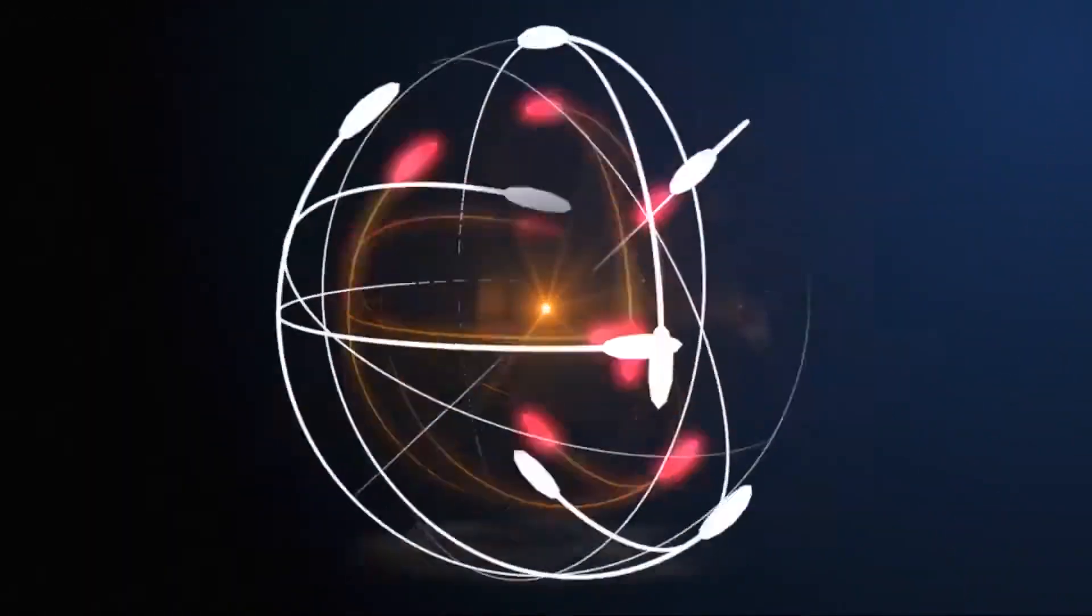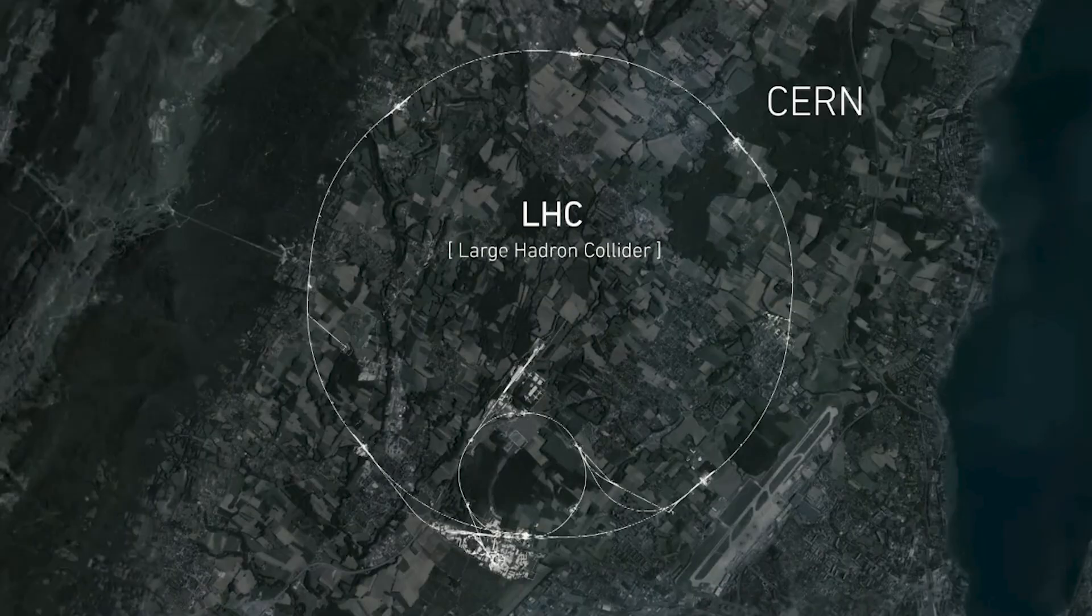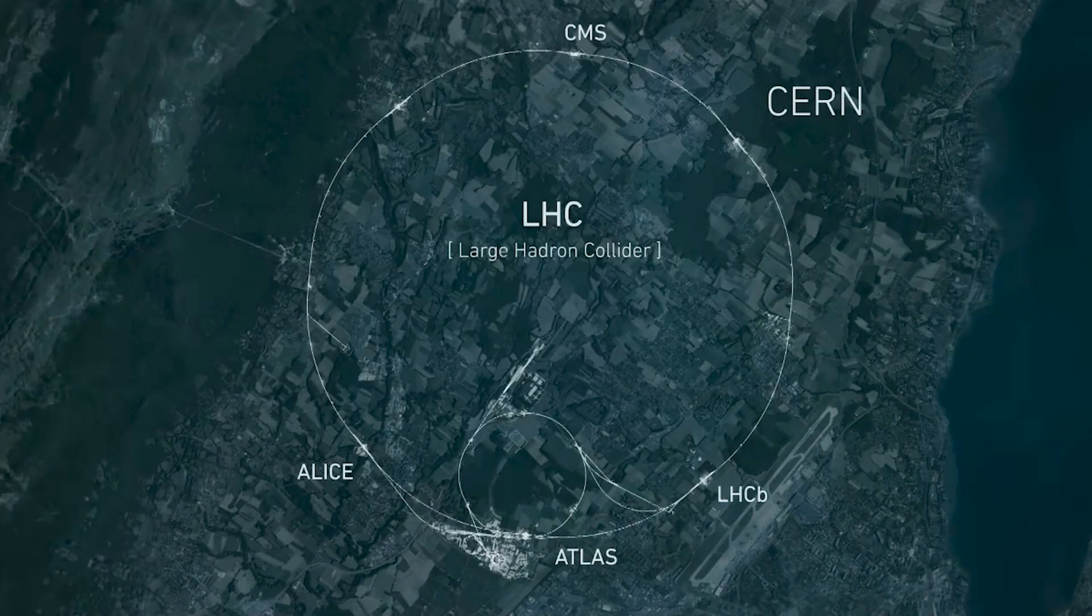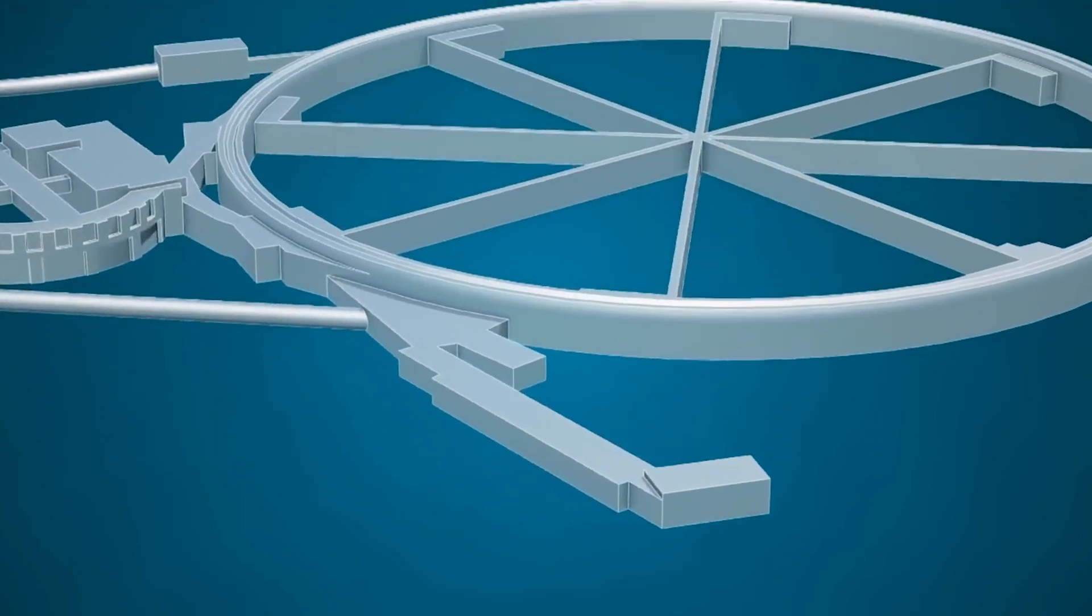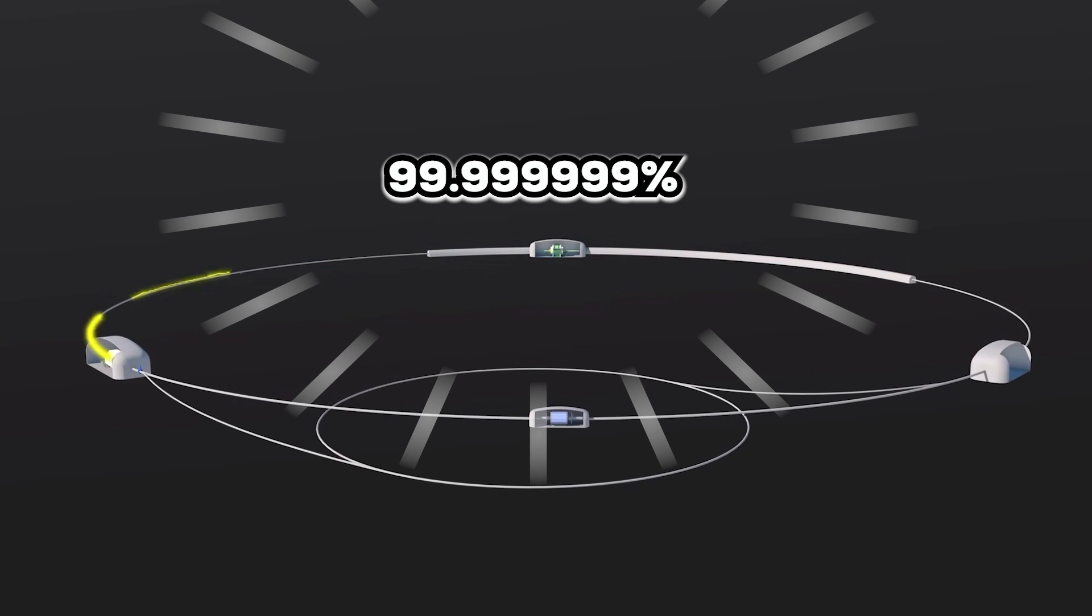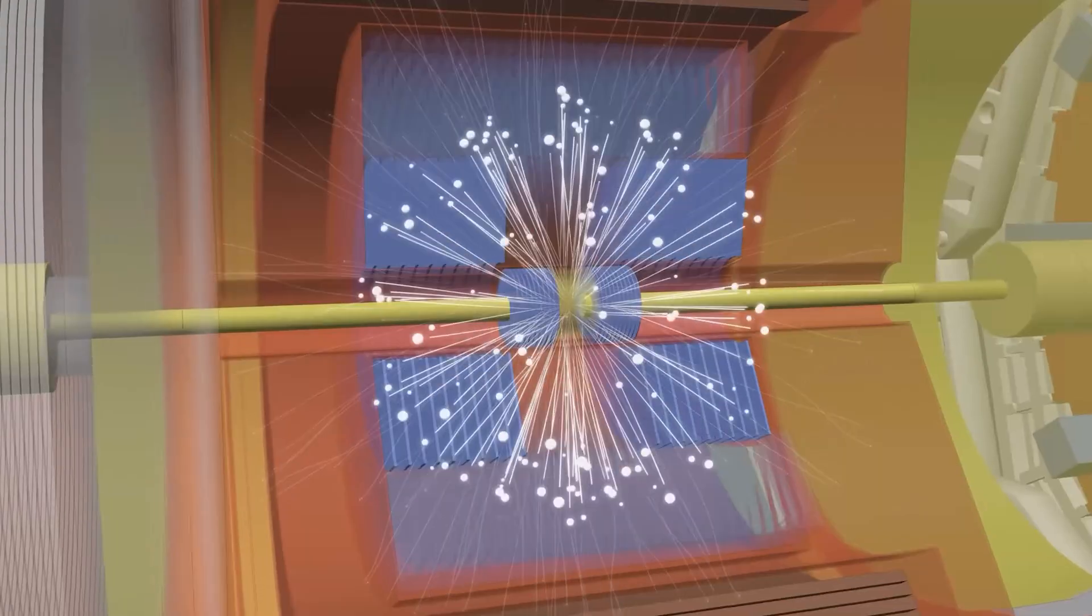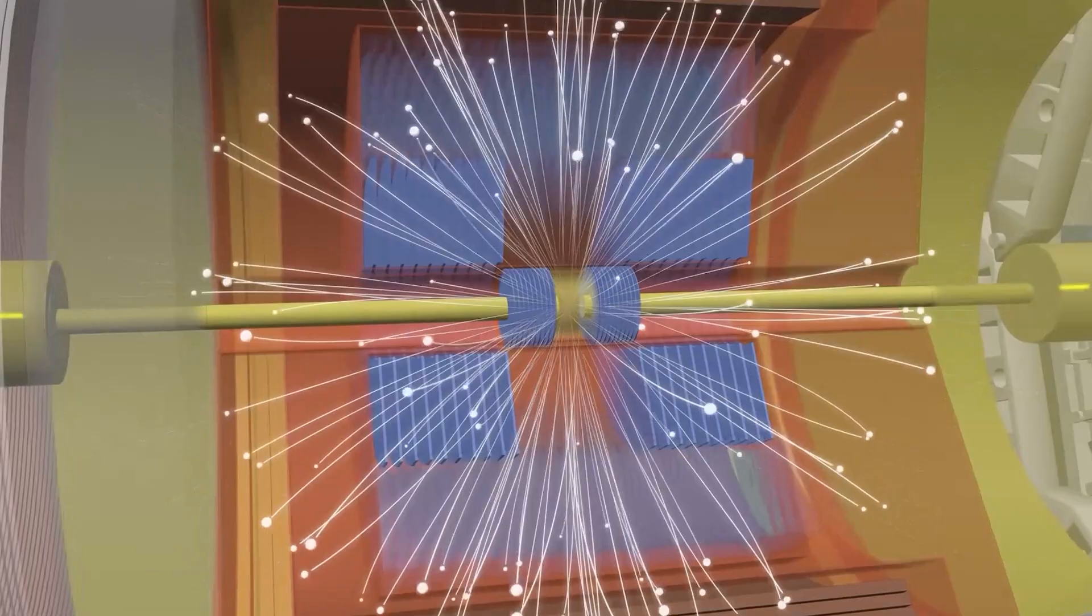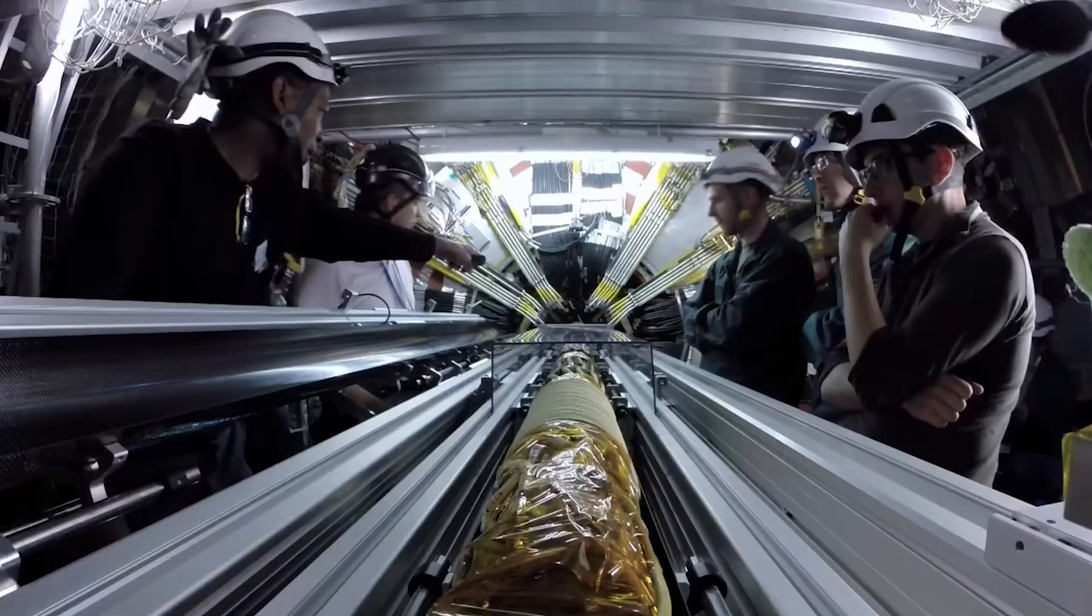So what exactly is this massive donut-shaped contraption? The LHC is basically the world's most sophisticated race car for subatomic particles. And when I say race car, I mean these particles are zooming around at 99.999999% the speed of light. But don't get too excited, it's not like you can grab popcorn and watch.